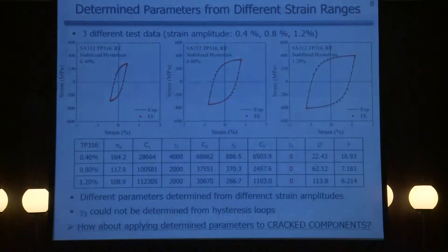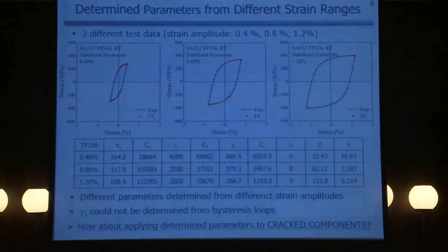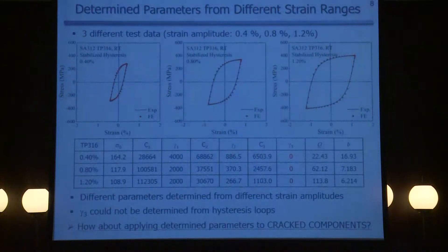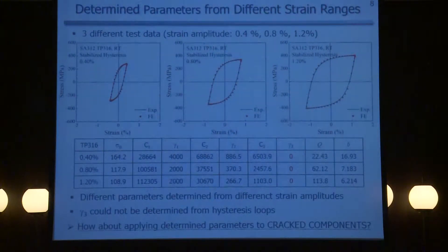Using this procedure with three different strain range test data — 0.4%, 0.8%, and 1.2% — and following the determination procedure, we determined all the parameters, summarized in this table. With different strain amplitude test data, we obtained different parameter sets. Using these parameters, we can now apply them to the crack component.